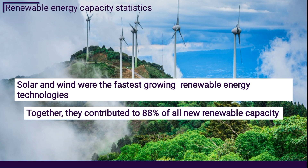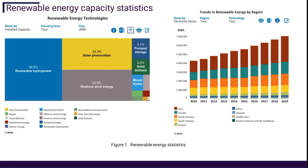Solar and wind were the fastest growing renewable energy technologies; together they contributed to 88 percent of all renewable capacity. In the infographic on the left, we can see that this area is dominated by renewable hydropower at 39.5 percent, followed by solar photovoltaic at 24.3 percent. On the right of this figure we can see that the Asian continent dominated the growth of renewable energy use since 2010.